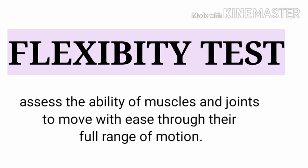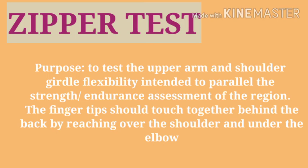The flexibility test assesses the ability of muscles and joints to move with ease through their full range of motion. The zipper test assesses upper arm and shoulder girdle flexibility — the fingertips should touch together behind the back by reaching one arm over the shoulder and the other under the elbow.